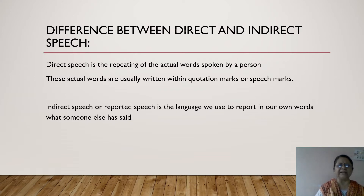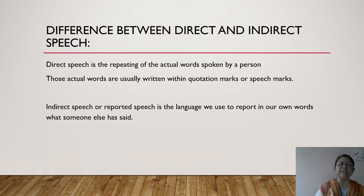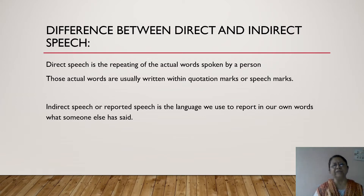First of all, what is direct speech? Direct speech is when we repeat the actual words spoken by a person. Those words cannot be changed. The actual words spoken by the person are put in inverted commas and we write exactly the same words — no change in any word. Before that we may write 'he said' or 'he asked', then put a comma, then start the inverted commas. There are two other names for inverted commas: quotation marks or speech marks.